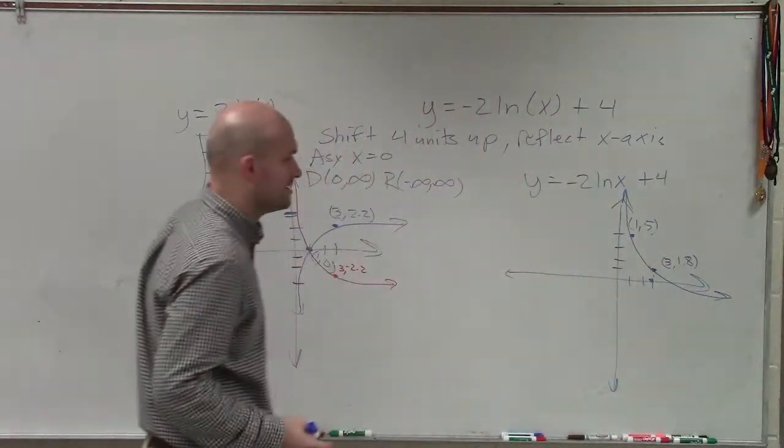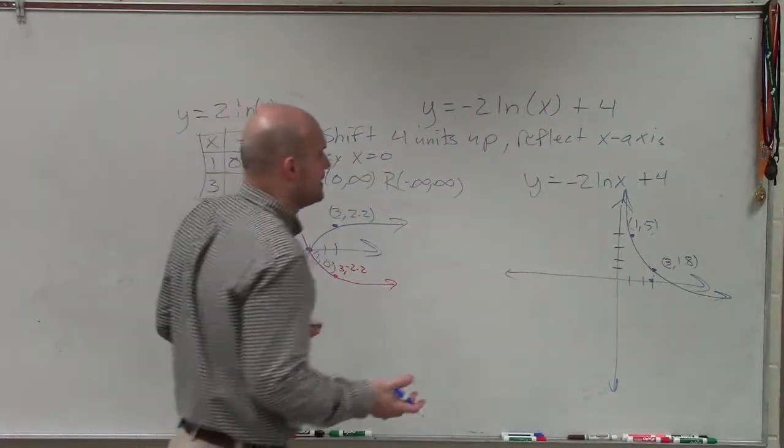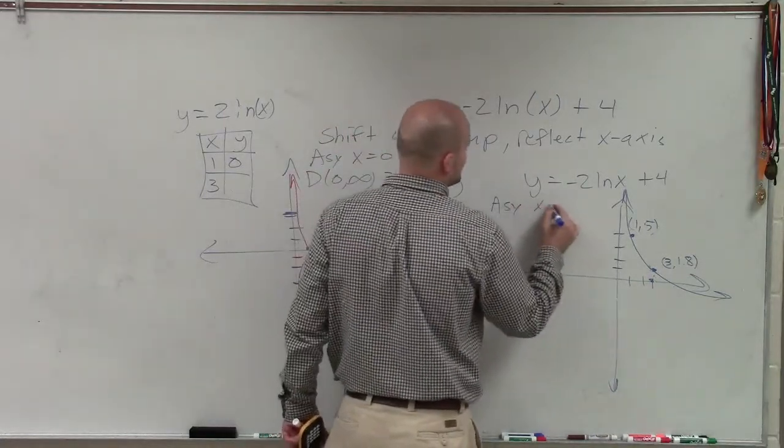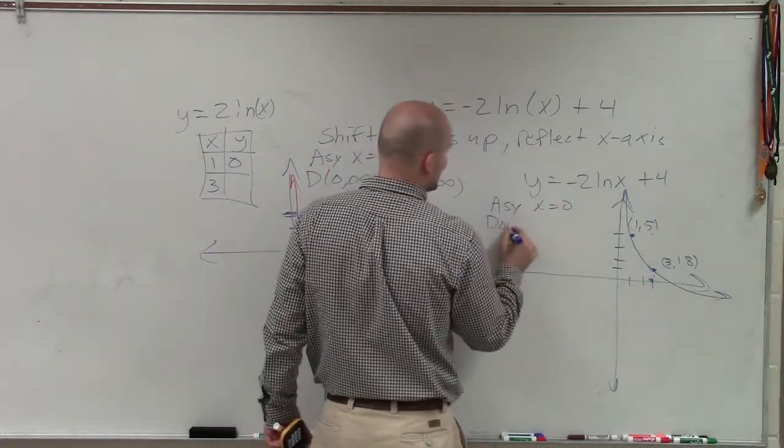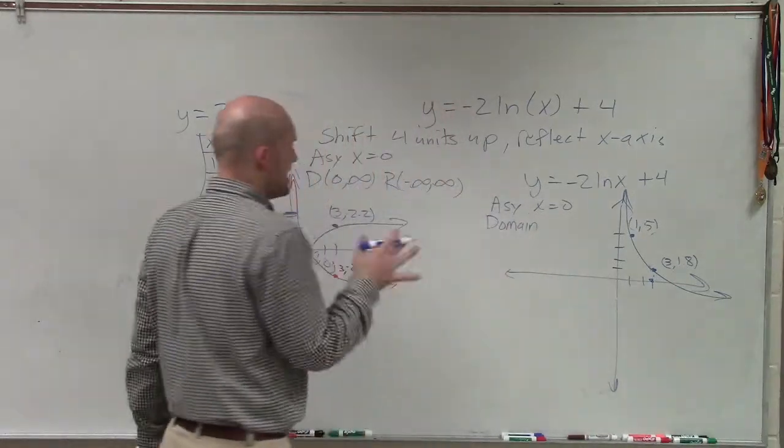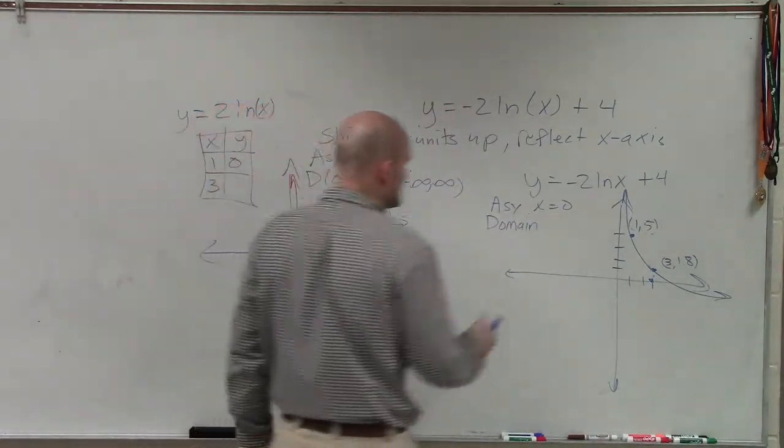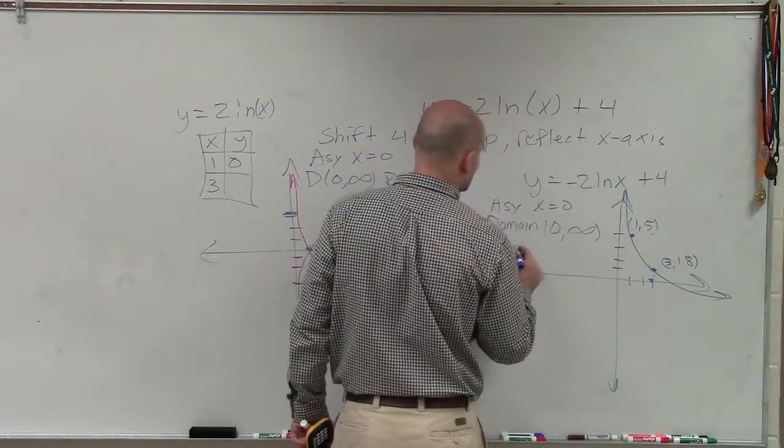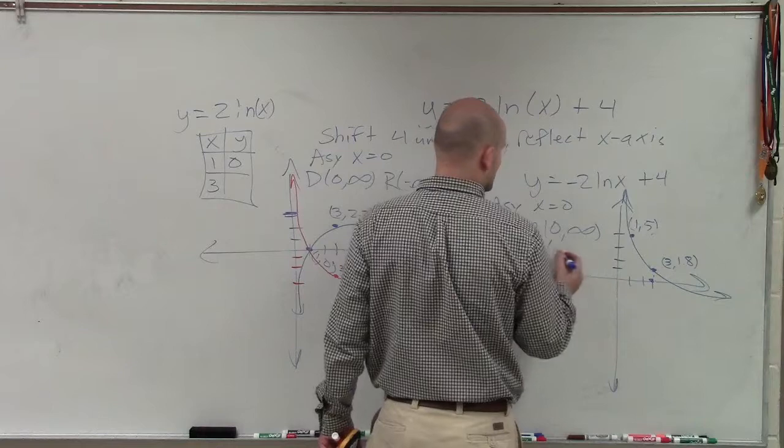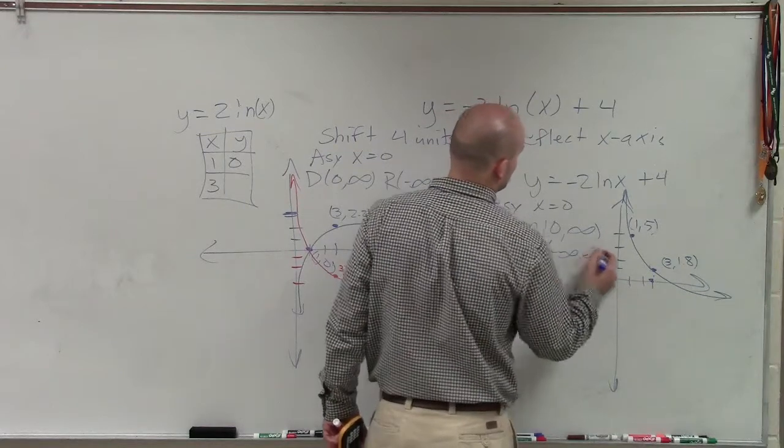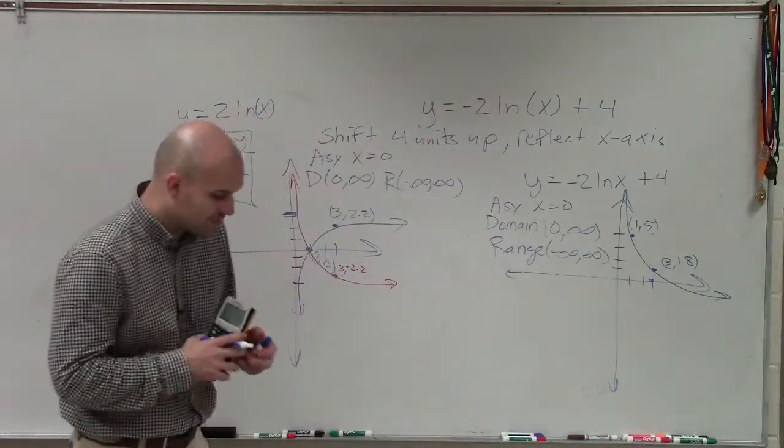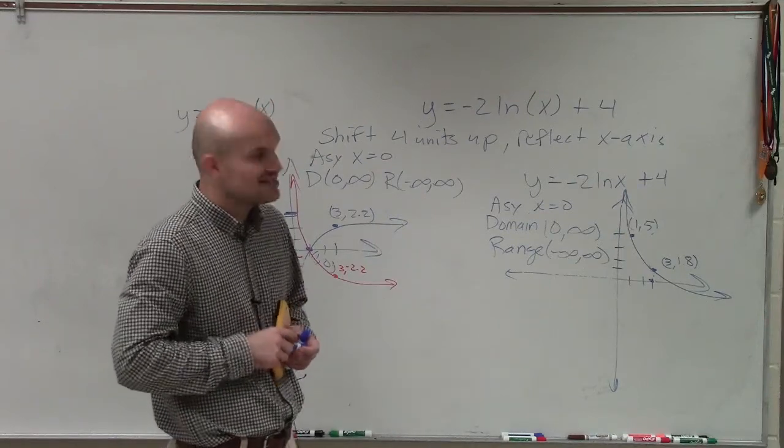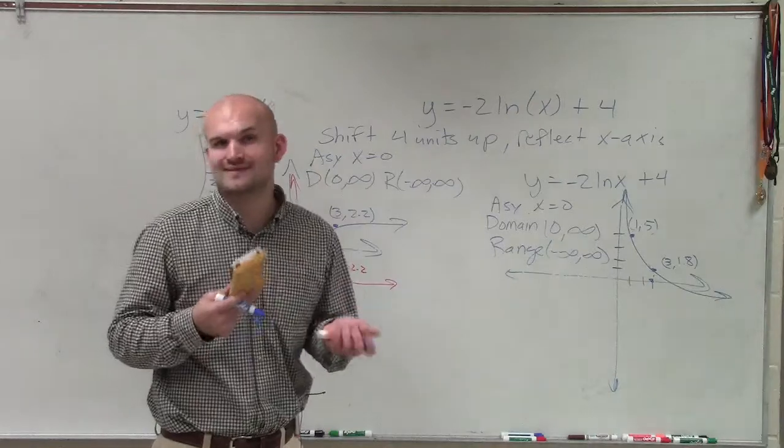So now I need to take a look and see, what exactly is my asymptote? Well, my asymptote hasn't changed, so my asymptote is x equals 0. My domain, just with the reflection over the x-axis, is not going to change. So my domain is still from 0 to infinity, and my range is now also going to be from negative infinity to infinity. So there you go, ladies and gentlemen. That's how you graph a natural logarithmic equation when you have a reflection over the x-axis and a vertical shift. Thanks.